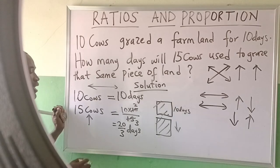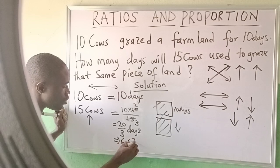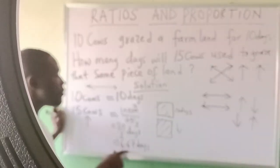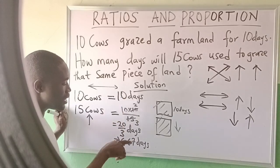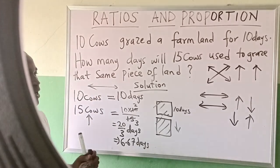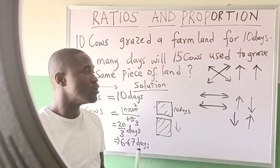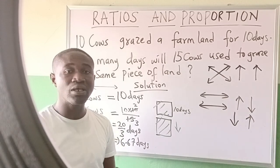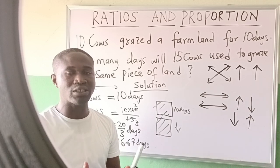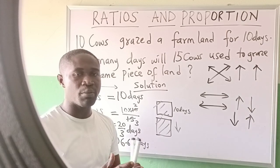20 over 3 is equivalent to 6.67 days. That means they will need a smaller number of days than 10 to finish that same farmland. Thank you for watching the video. If you find it helpful, please share with your friends and encourage them to join and watch all the interesting videos on my channel. Thank you so much for being part of my channel.